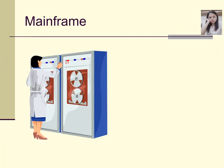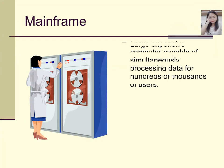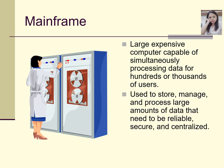A mainframe is a large, expensive computer capable of simultaneously processing data for hundreds or thousands of users. Usually, mainframes are found in systems like ATM machines or vending machines. You call this a large computer.